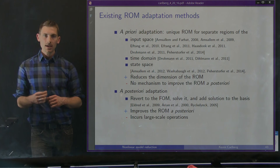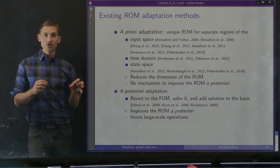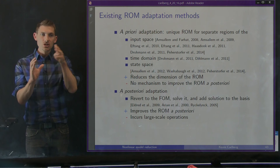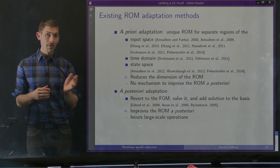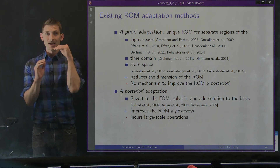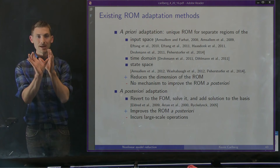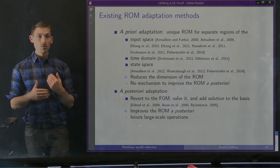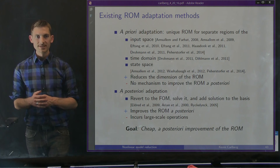For a posteriori adaptation, there has really been only one method: the simplest thing you might imagine. We track whether the ROM is working well by evaluating the residual, and if it fails, we revert to the full model for that time step, solve it — which is expensive — and add that solution to our reduced basis to enrich it. The problem is that for our moving shock example, past two and a half seconds we would only be solving the full order model, which is not attractive for fluid dynamics problems with many discontinuities or advection-dominated flows.